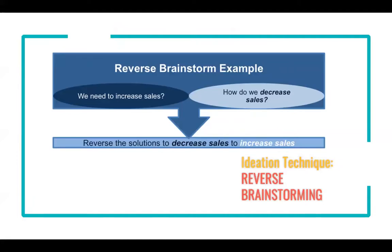Another example is reverse brainstorming. We all know what brainstorming means. Reverse brainstorming means we actually think of solutions that might fail. So instead of thinking 'how can we increase sales' or 'how can we find more customers,' we find solutions to decrease sales. This technique helps us brainstorm different scenarios of a problem.